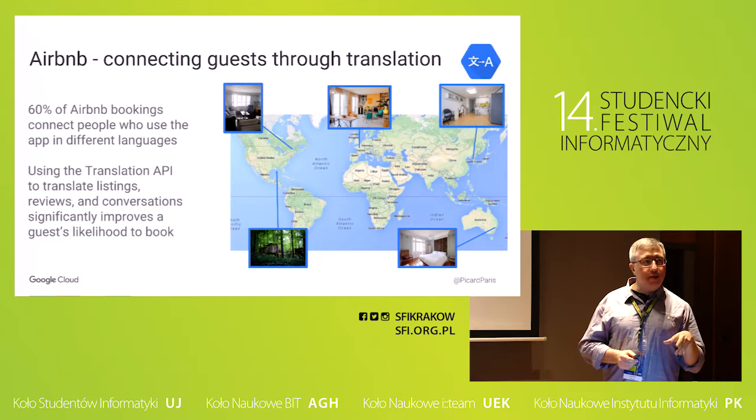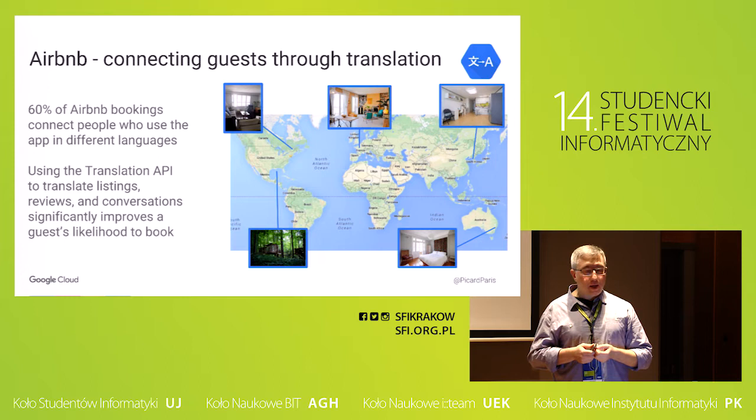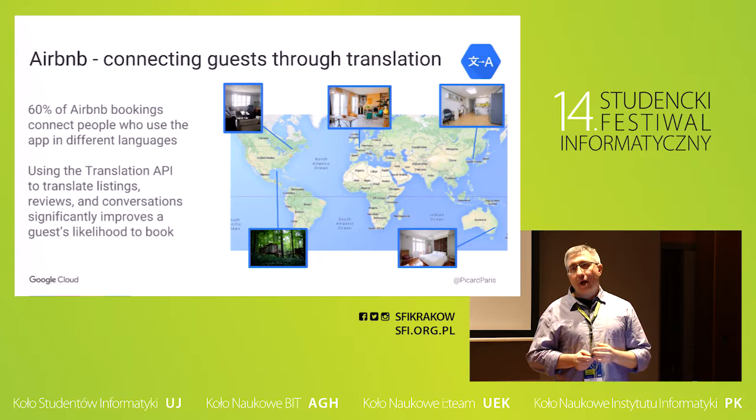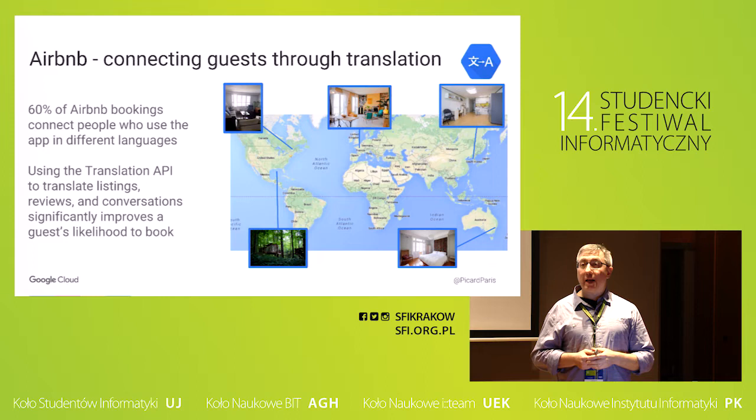Airbnb is a great example: 60% of their connected users don't speak the same language, which can be an issue for people to communicate. So they're using the Translation API to translate virtually everything — the listings from their users, the communication. Thanks to that they have highly improved the likelihood for people to book rooms or houses.